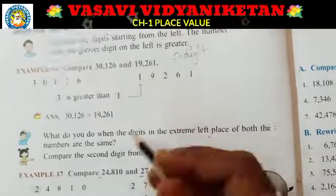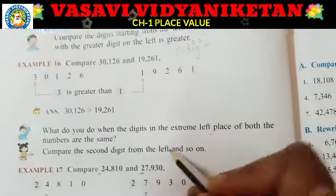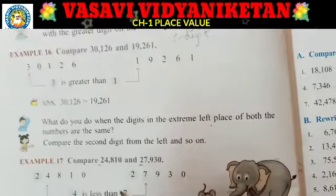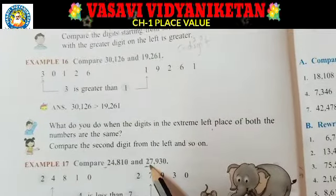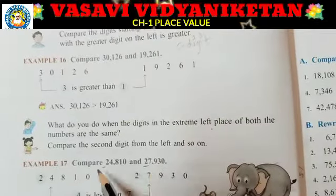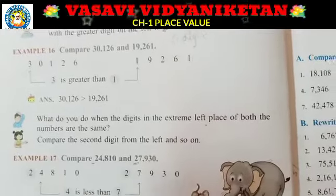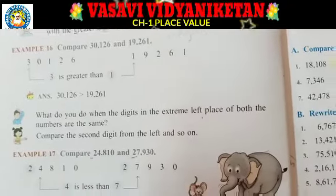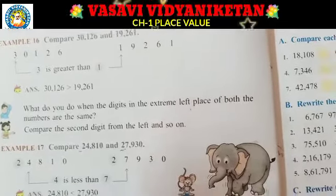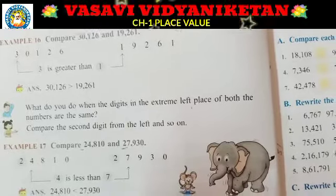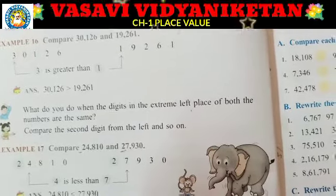So compare the second digit from the left, and so on. The second digit, second place on the left digit — we compare. See, here is example 17: Compare 24,810 and 27,930.